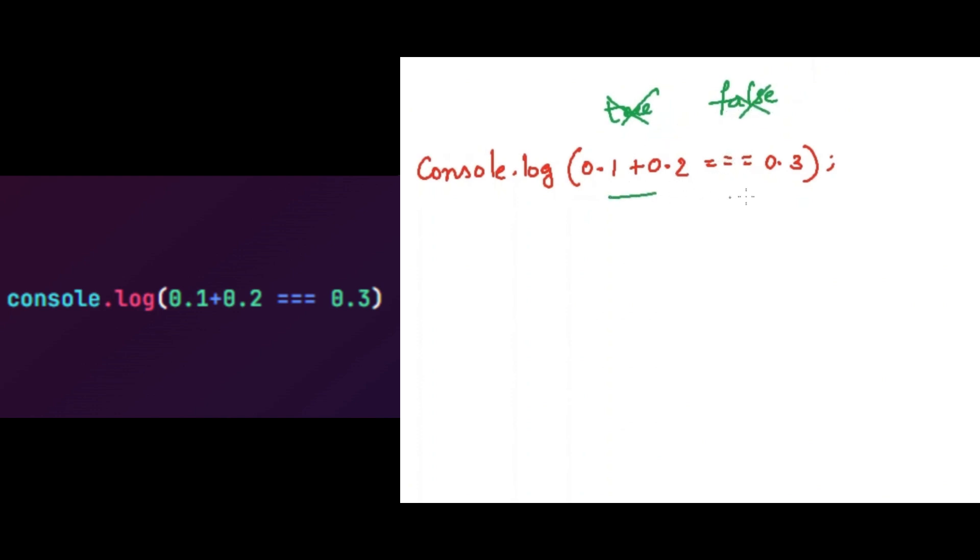When we are adding the floating point values in this case, 0.1 plus 0.2, you will think that it is 0.3, but it's not. This is a tiny bit more than 0.3. It can be approximately 0.003, so which will be tiny bit more than 0.3.